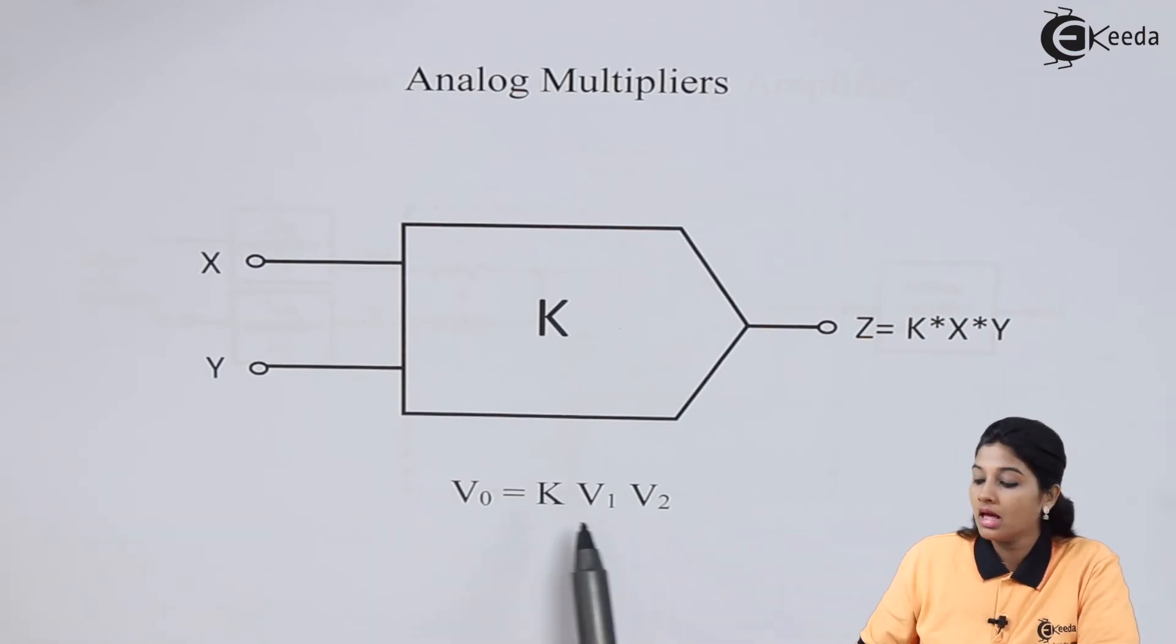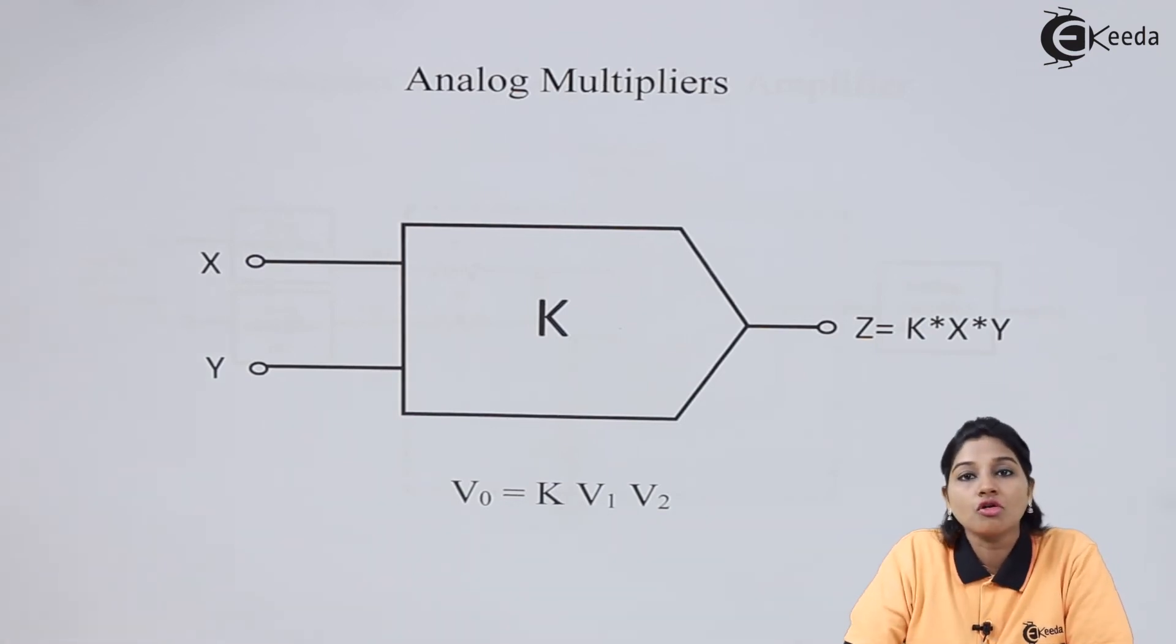V1 and V2 are the input signals and K is called as Constant or Scaling Factor. The unit of K is V raised to minus 1. The multiplier can be Analog Multiplier or Digital Multiplier. The accuracy of Digital Multiplier is very much higher as compared to Analog Multiplier.